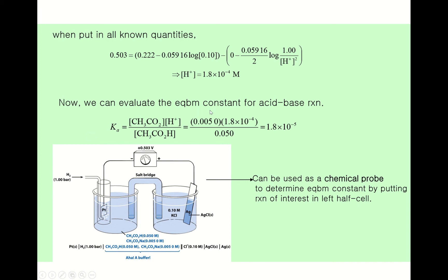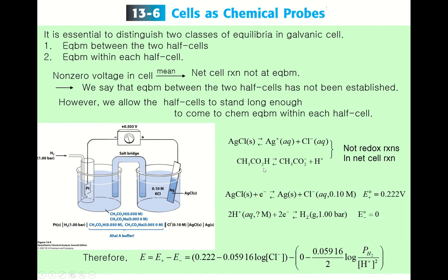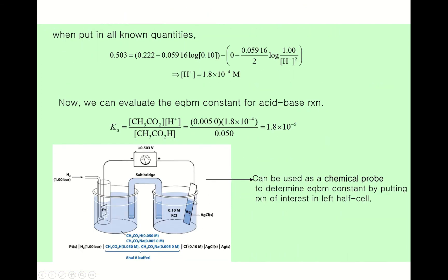Now we can evaluate Ka. The definition of Ka is Ka = [H⁺][acetate⁻] / [acetic acid]. The acetic acid concentration is 0.05 molar, the acetate concentration is 0.005 molar, and we calculated [H⁺] = 1.8 × 10⁻⁴ molar. Substituting gives Ka = 1.8 × 10⁻⁵.